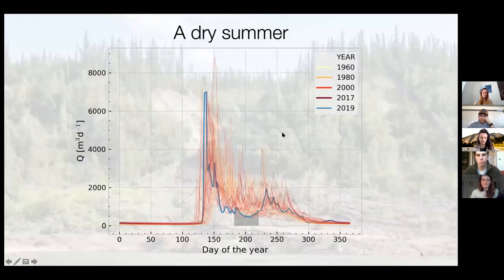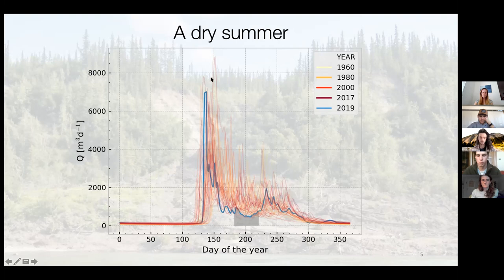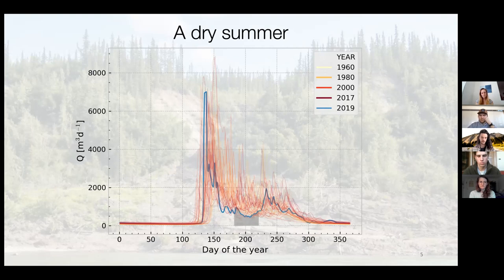We were there in a very dry summer. Here you can see a bunch of time series of years of discharge at the outlet at Fort McPherson in the north. The blue line, which is the year we were there — 2019 — is really on the lower side, especially the period where we were sampling. It's really one of the driest times on record so far. This was clearly noticeable when we were in the field. There were forest fires all around us all the time, the water level was extremely low, so sometimes it was really hard to move forward. Many of the tributaries we intended to sample initially were dry, so that was also a challenge.